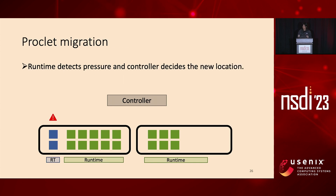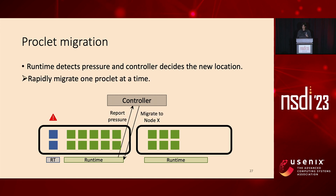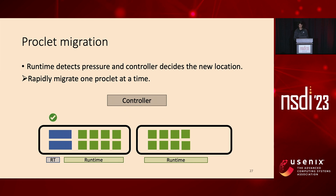Proclet migration is our key design element. Let's assume the left-hand machine is about to run out of resources. The runtime quickly detects the pressure and reports it to the controller. The controller, knowing the available resource situation of all machines, makes a decision to tell the overloaded server to migrate proclets into the right-hand server. The runtime then rapidly migrates proclets, including their memory and threads, successfully resolving the resource pressure.